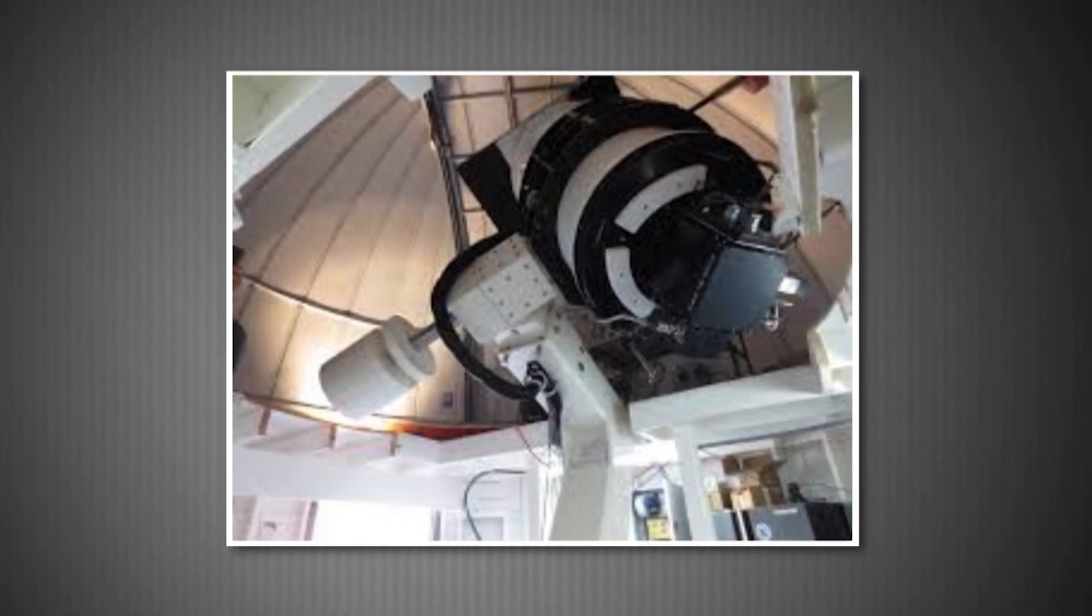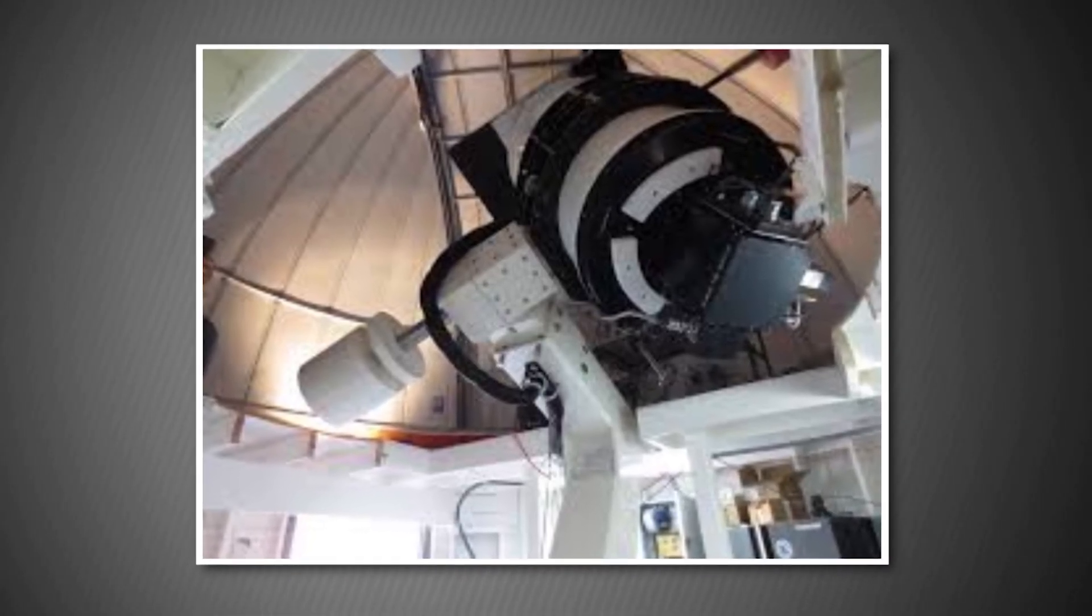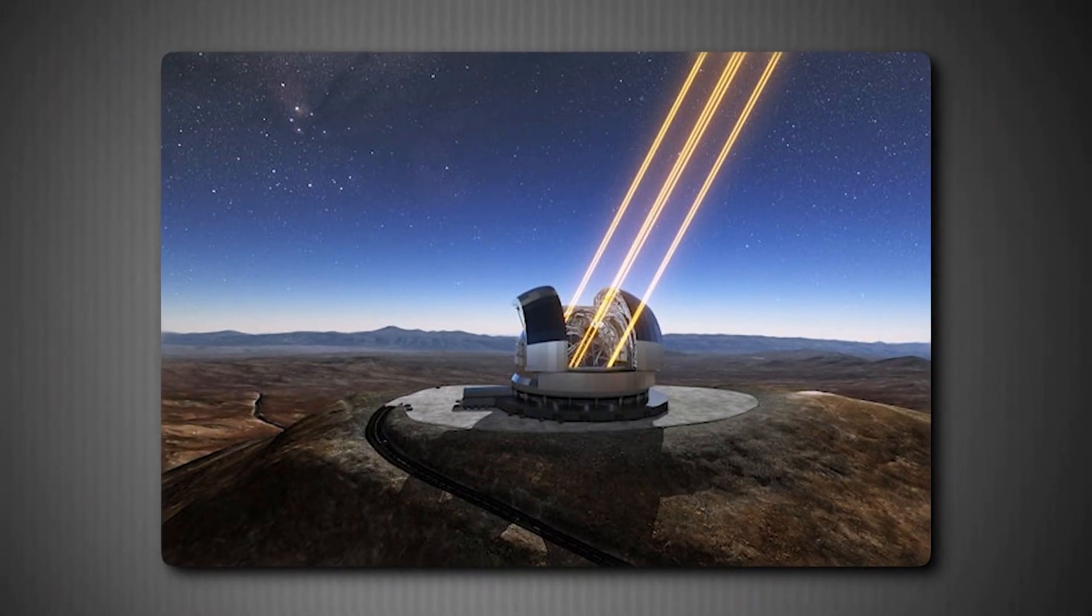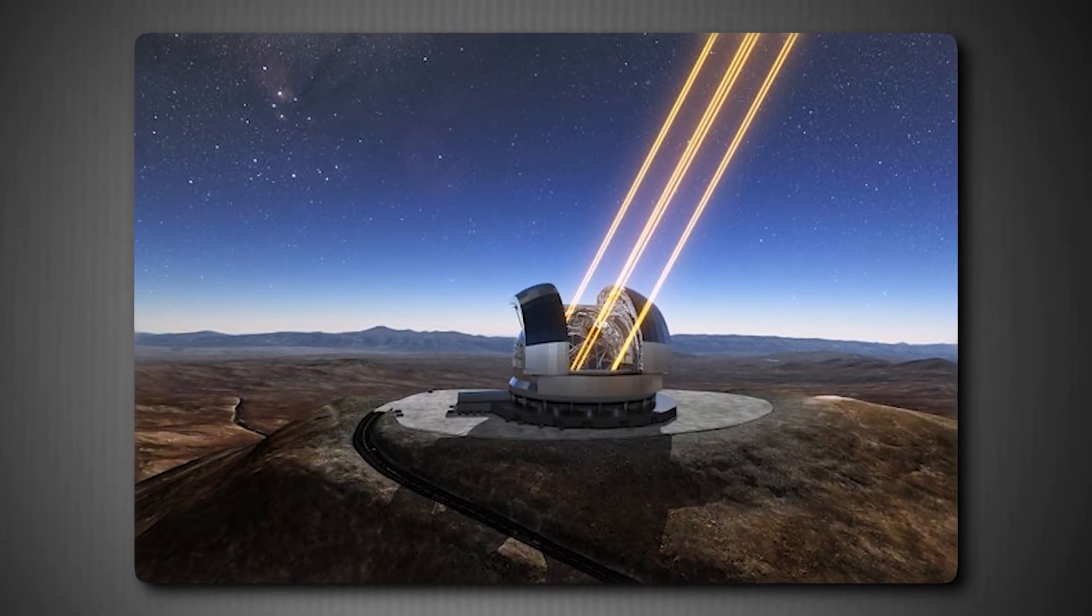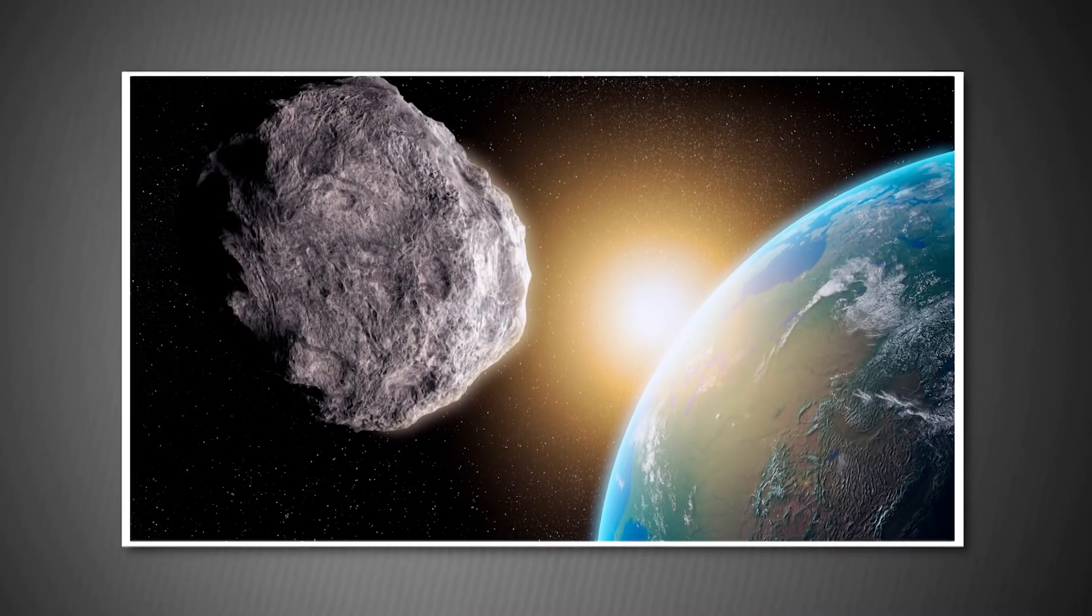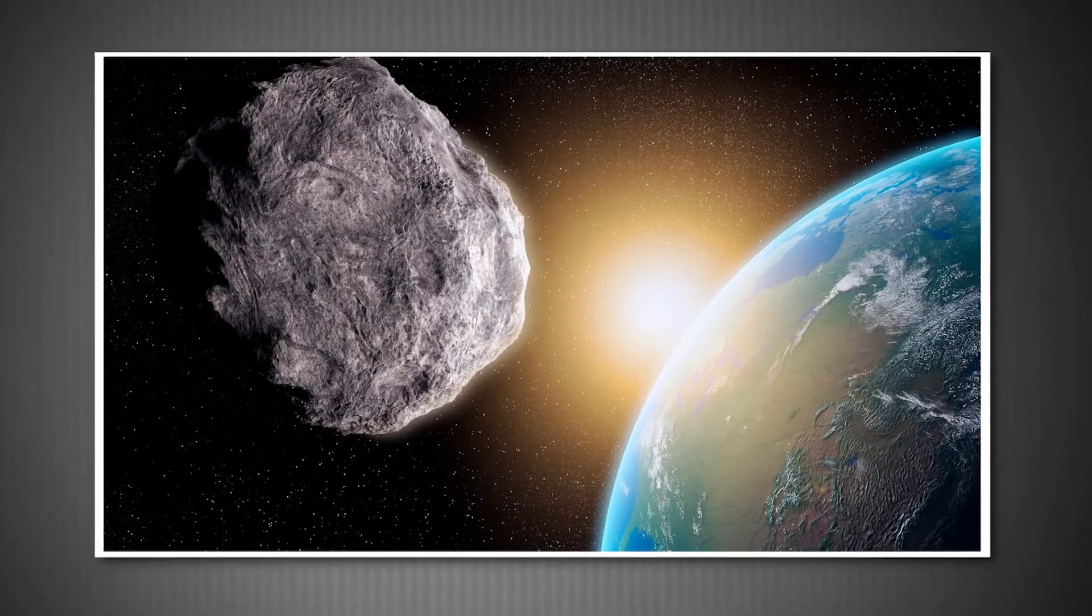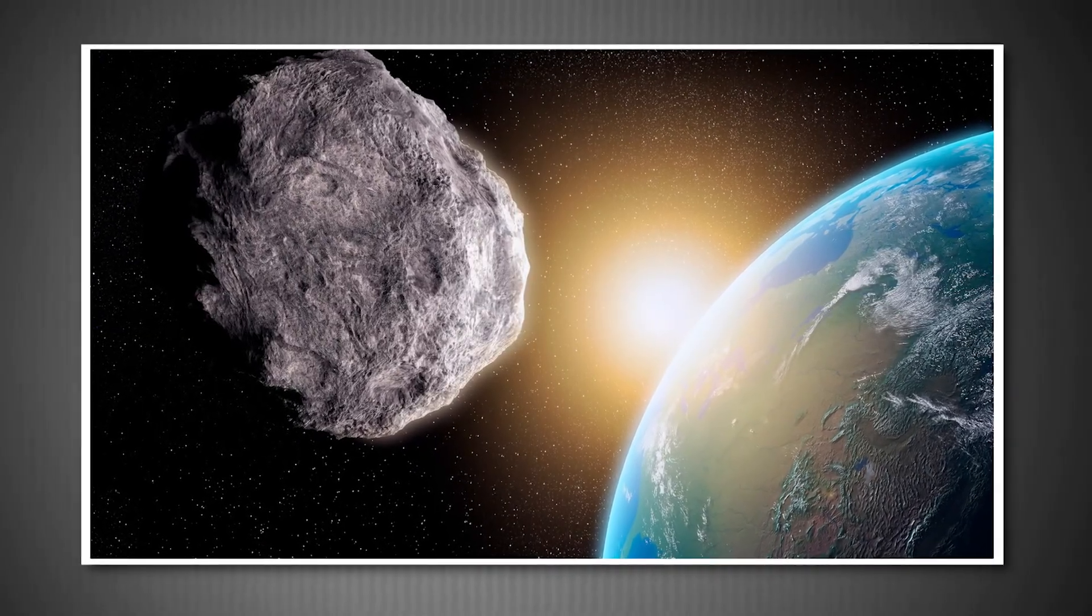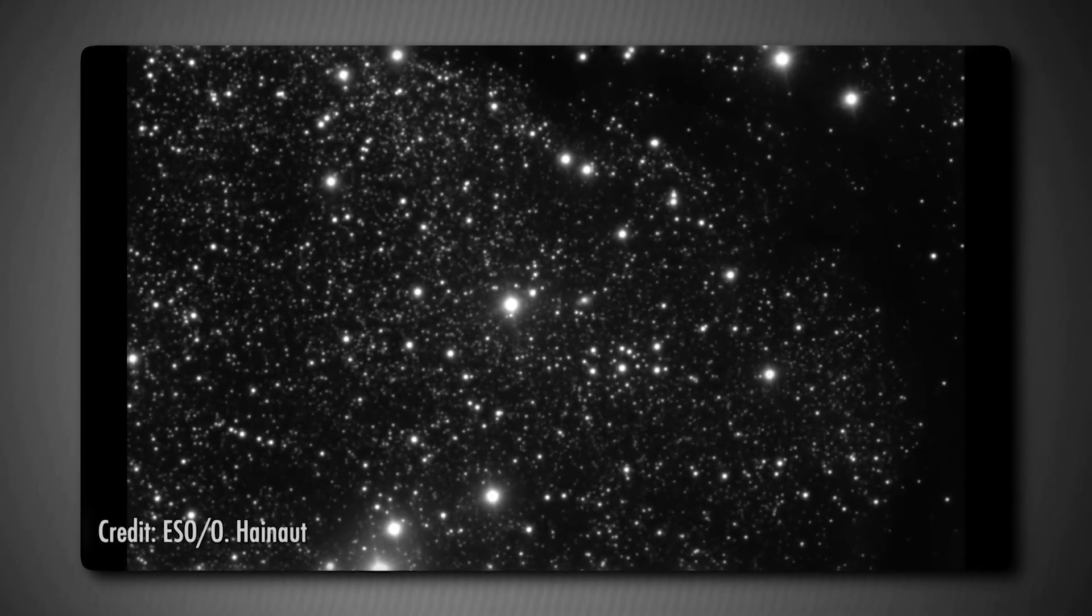Let me take you back to how this all unfolded because the discovery story itself is absolutely fascinating. The Asteroid Terrestrial Impact Last Alert System, or ATLAS for short, consists of four powerful survey telescopes strategically placed around the world. Their job? To scan the entire sky multiple times every night, looking for potentially dangerous asteroids that might threaten Earth. But on the night of July 1st, they caught something far more extraordinary.